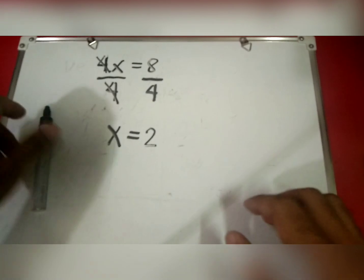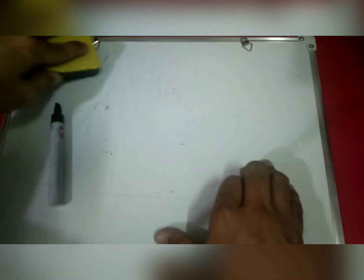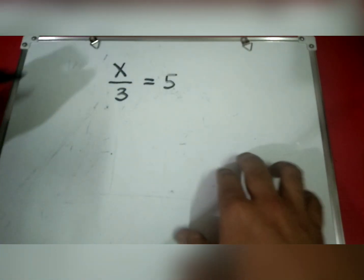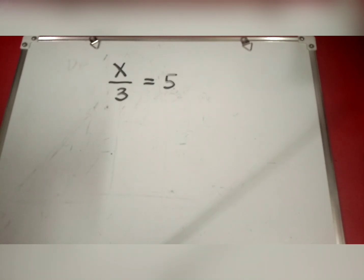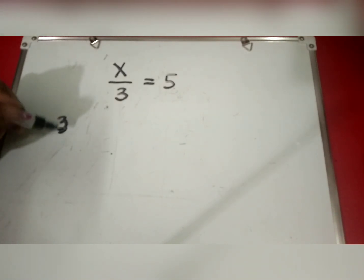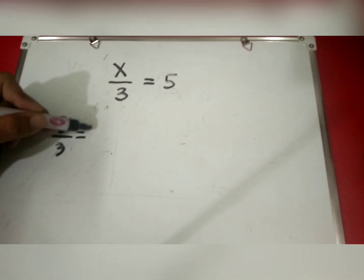Another puzzle — solve this one: x over 3 equals 5. Again, what we want is an answer like x equals something. The divide-by-3 is in the way, so if we multiply by 3 we can cancel out the divide-by-3, because 3 over 3 is equal to 1.